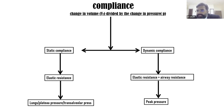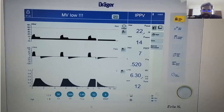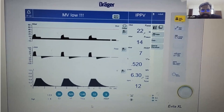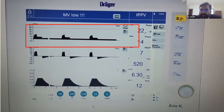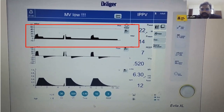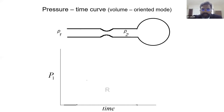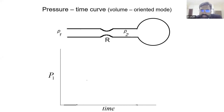Dynamic compliance signifies peak pressure; static compliance reflects plateau pressure or alveolar pressure. On the ventilator graph — a pressure-versus-time waveform — P1 is the airway pressure at the mouth opening, P2 is pressure near the alveolus, and R is airway resistance. We are working in volume-control mode, the most common ventilator mode.